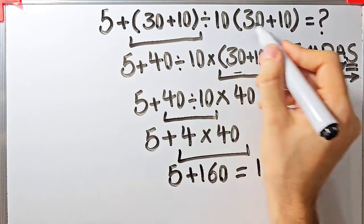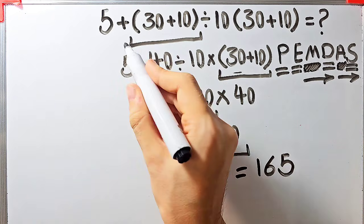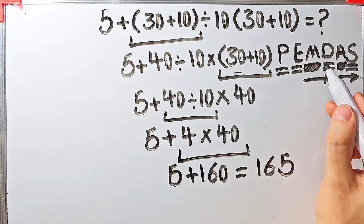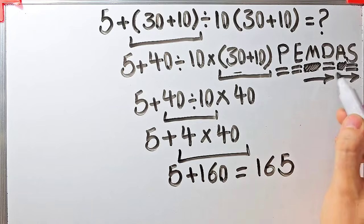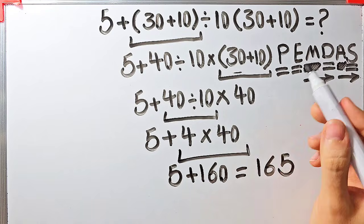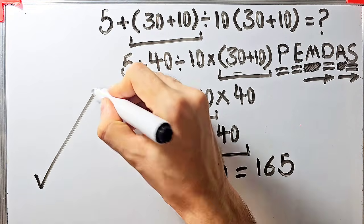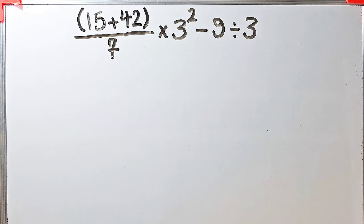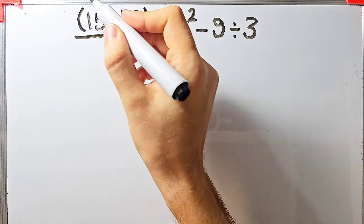5 plus 160 equals 165. The final answer of this question equals 165. If you want to get the right answer you must follow the PEMDAS rule. Let's solve another question.